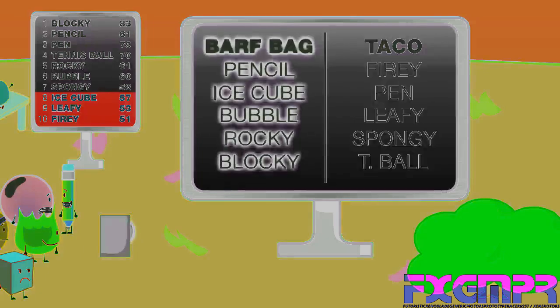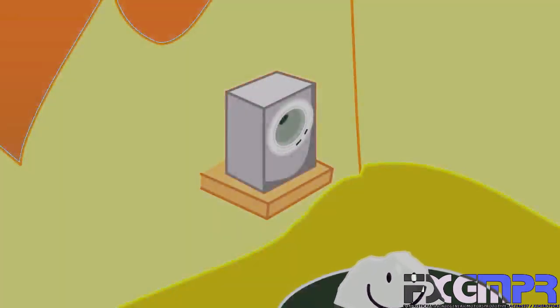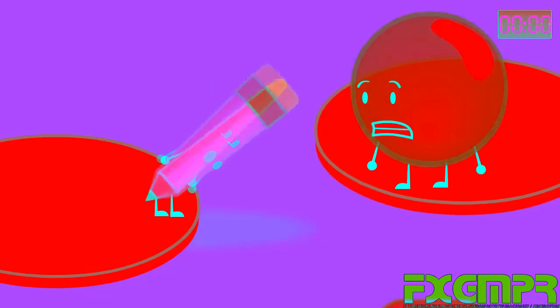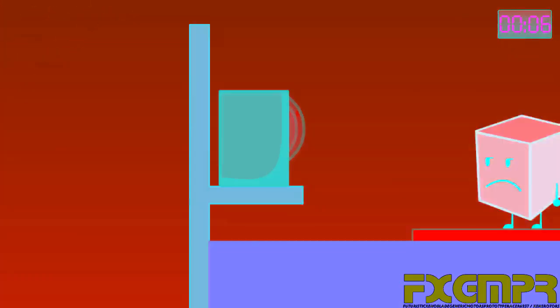Let's start with the barf bag contest. You're all floating in a large barf bag. For every second you stay on top of your island, you earn one point. Go. OMG, Bubble, is that actually vomit? No, it's colored water.